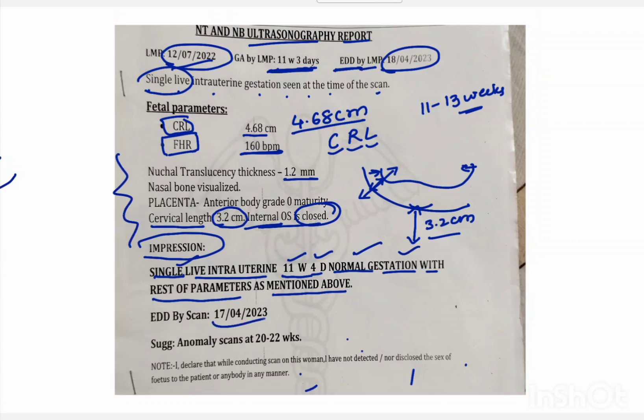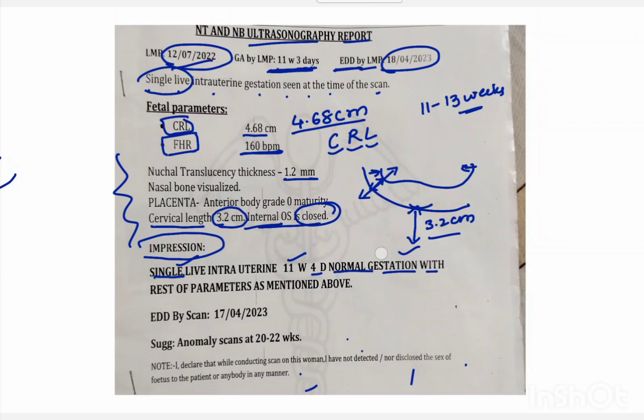The next scan to be done is at 20 to 22 weeks, which is the TIFFA scan. This concludes the anti-scan report of the baby girl.